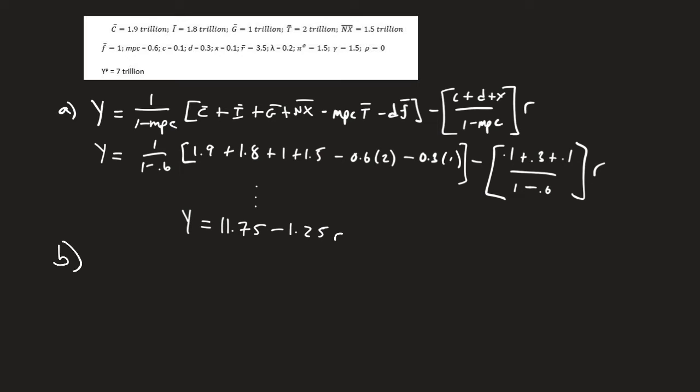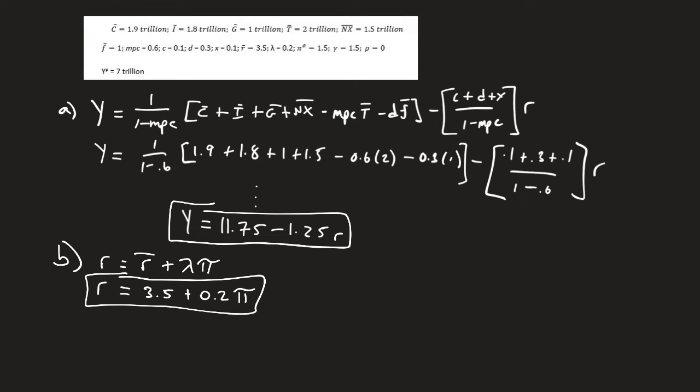The second part was the MP curve. Remember, our MP curve is going to be R equals R bar plus lambda times pi. And that's easy because we just plug in everything we see. We see that R bar is 3.5, and we see that lambda is 0.2, and pi is what we're looking at. So we have our IS curve up here. We have my MP curve up here.